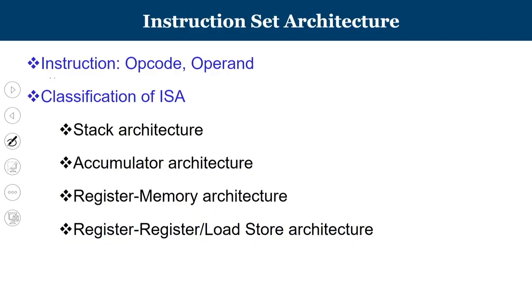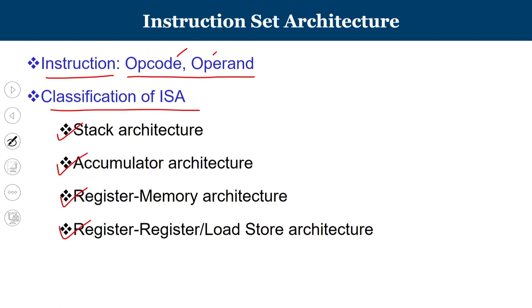An instruction consists of opcode and operand. In the majority of cases you have both, but rarely there are cases where only an opcode is present. We can classify instruction set architectures into four types: stack architecture, accumulator architecture, register-memory architecture, and register or load-store architecture. Let us understand the differences between these classifications.